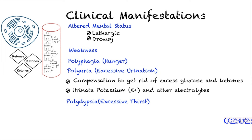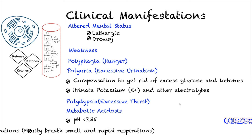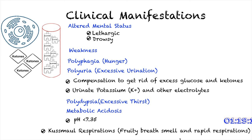The next symptom is polydipsia, or excessive thirst. This occurs because of the polyuria — we are urinating too much, which causes dehydration, and the brain sends signals that we are thirsty. Another symptom is metabolic acidosis. The body becomes acidotic because of the presence of ketones — too much of these ketones are very toxic, causing a pH less than 7.35. The body also tries to compensate by expelling ketones through respiration, causing fruity breath smell and rapid breathing. You can remember all these clinical manifestations by thinking of the three occurrences: the hungry cell, the presence of glucose in the bloodstream, and the presence of ketones.